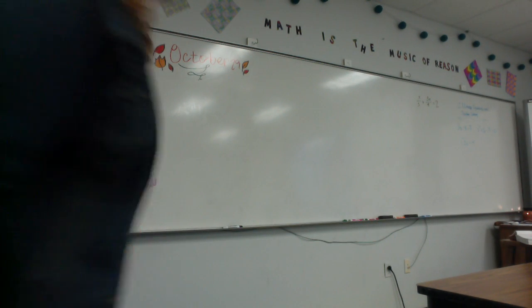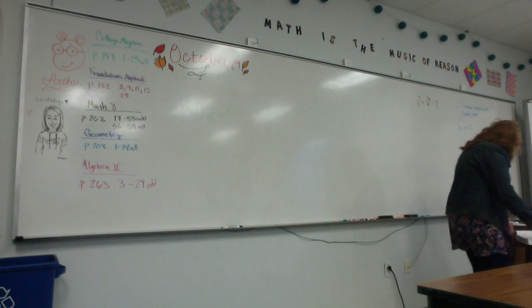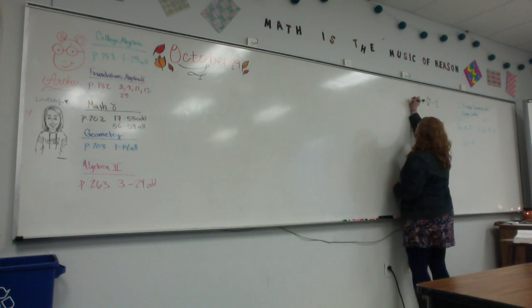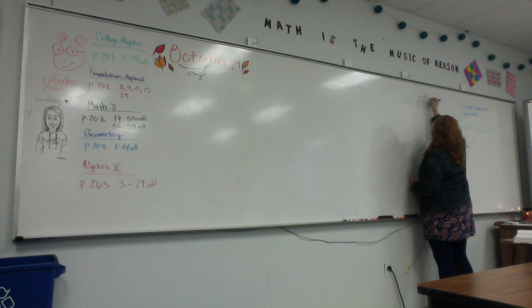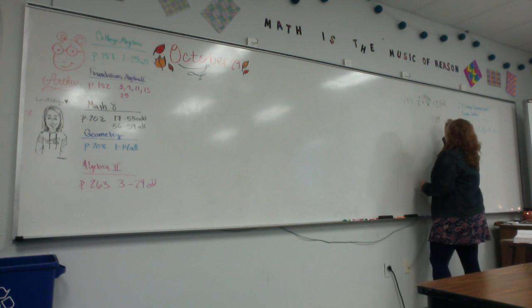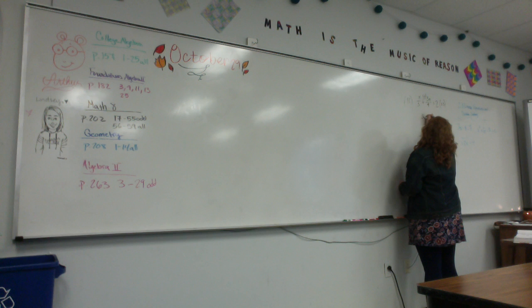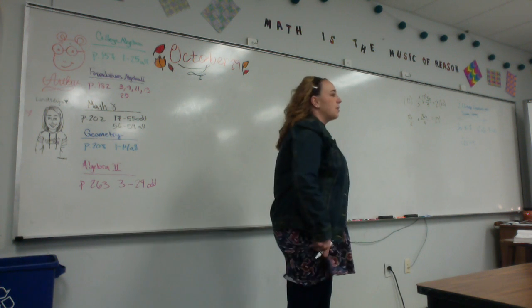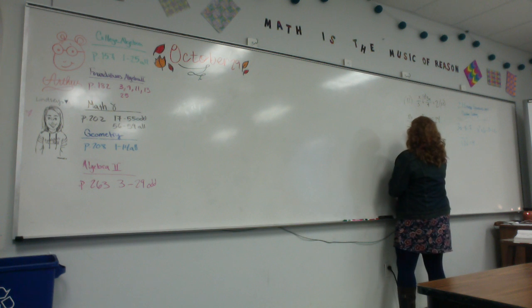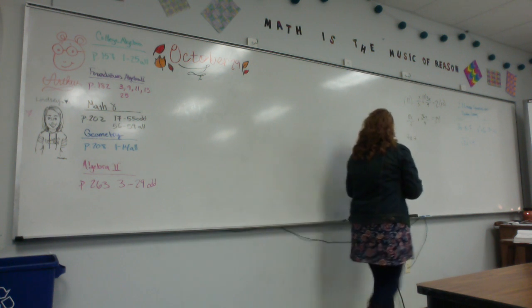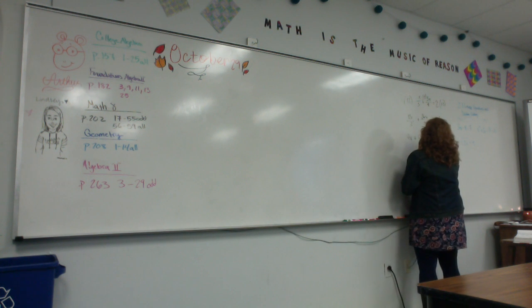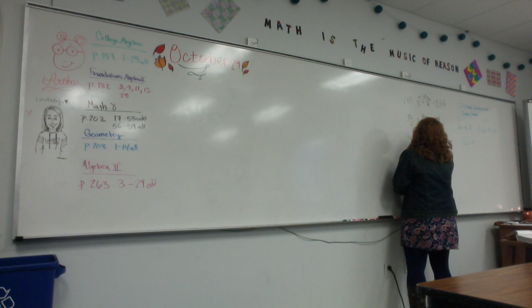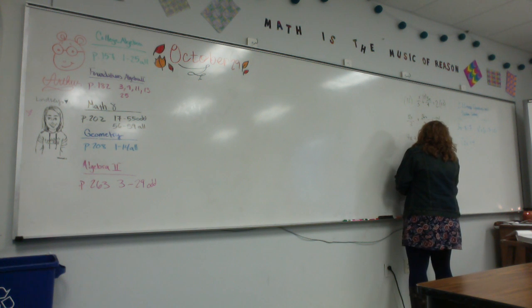We have to solve it with a common denominator, and the least common denominator is 12 in this case. So what you're going to do is multiply each thing by 12. I'm going to multiply this by 12, this by 12, and this side by 12. When I do that, I get 12x over 3 and 36x over 4, which reduce to 4x and 9x, giving 13x equals 24. I divide by 13, and x equals 24 thirteenths.